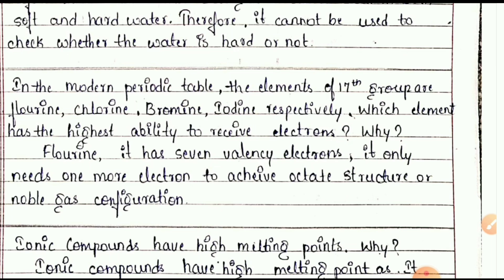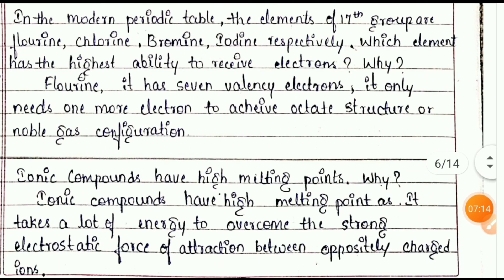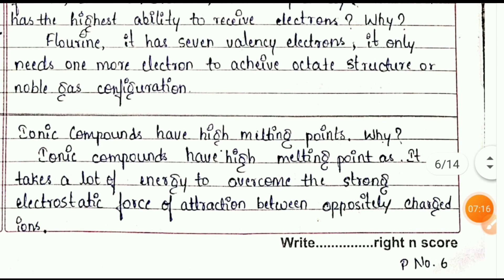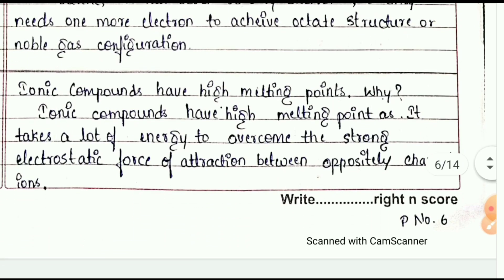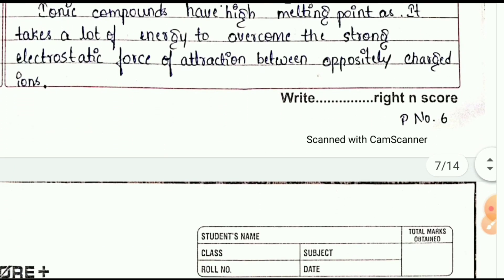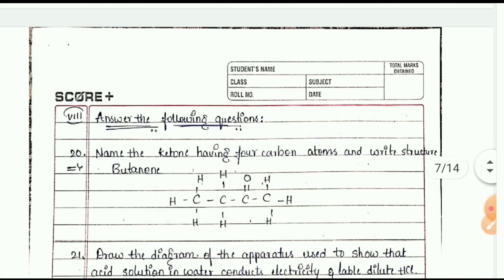Ionic compounds have high melting points. Why? Because it takes a lot of energy to overcome the strong electrostatic force of attraction between opposite ions.